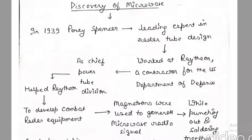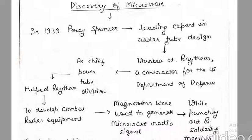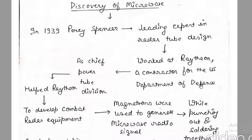For the main discovery of the microwave, in 1939 there was a person named Percy Spencer, who was a leading expert in radar tube design. He worked at a company called Raytheon as a contractor for the US Department of Defense, serving as Chief of the Power Tube Division.